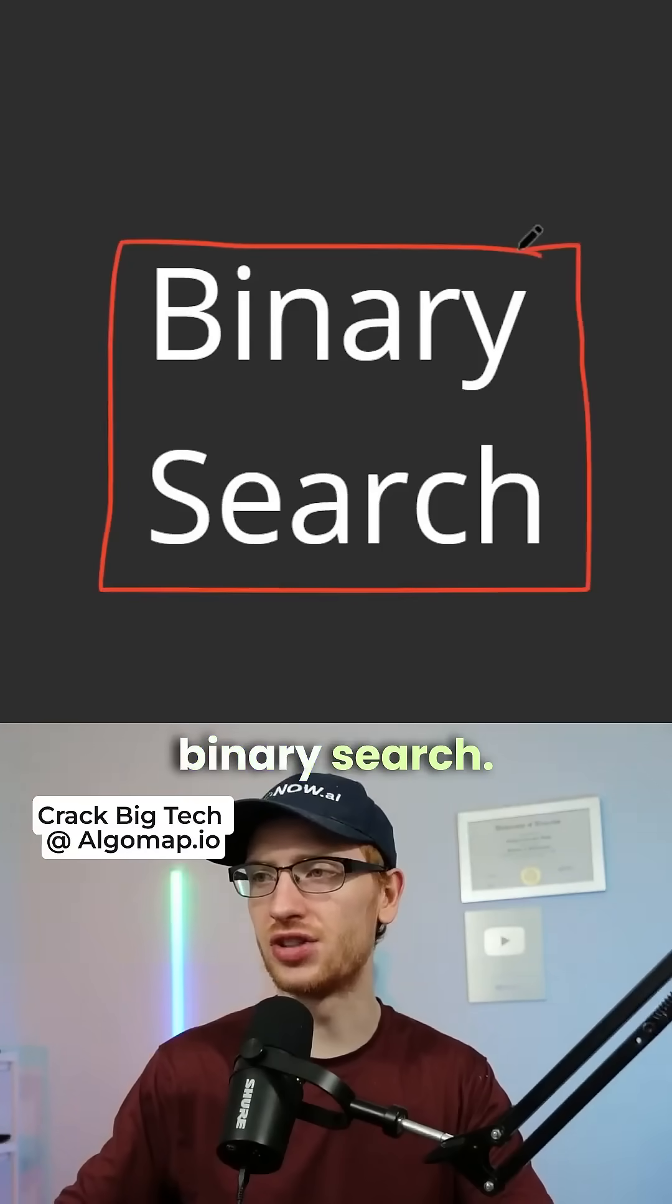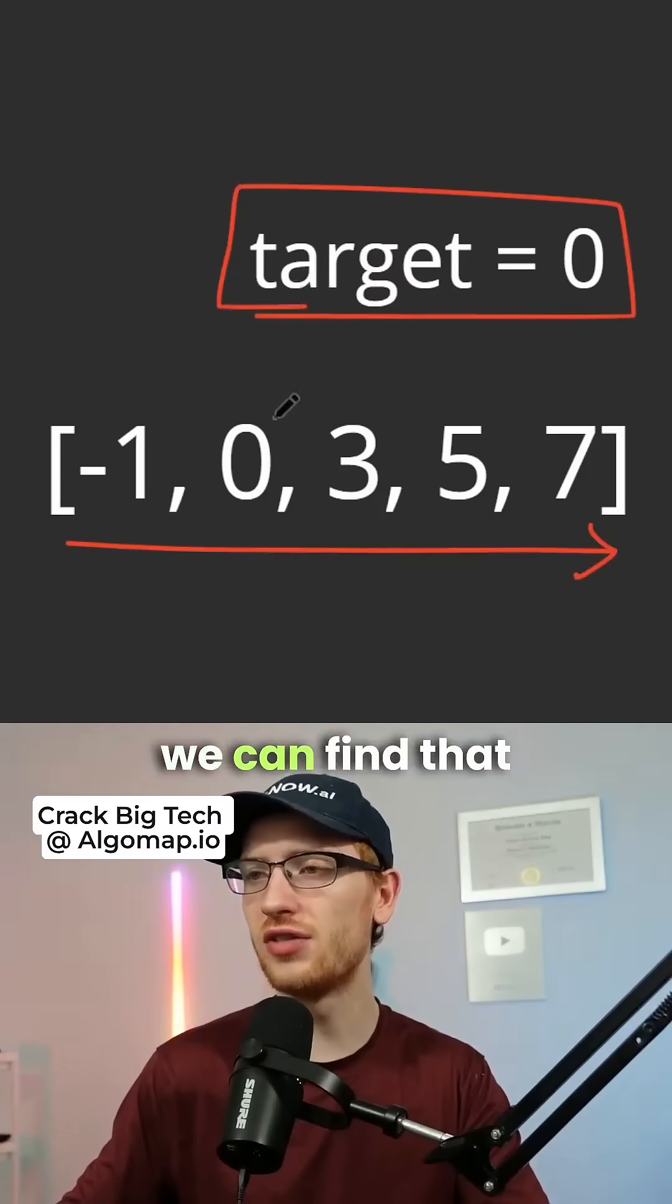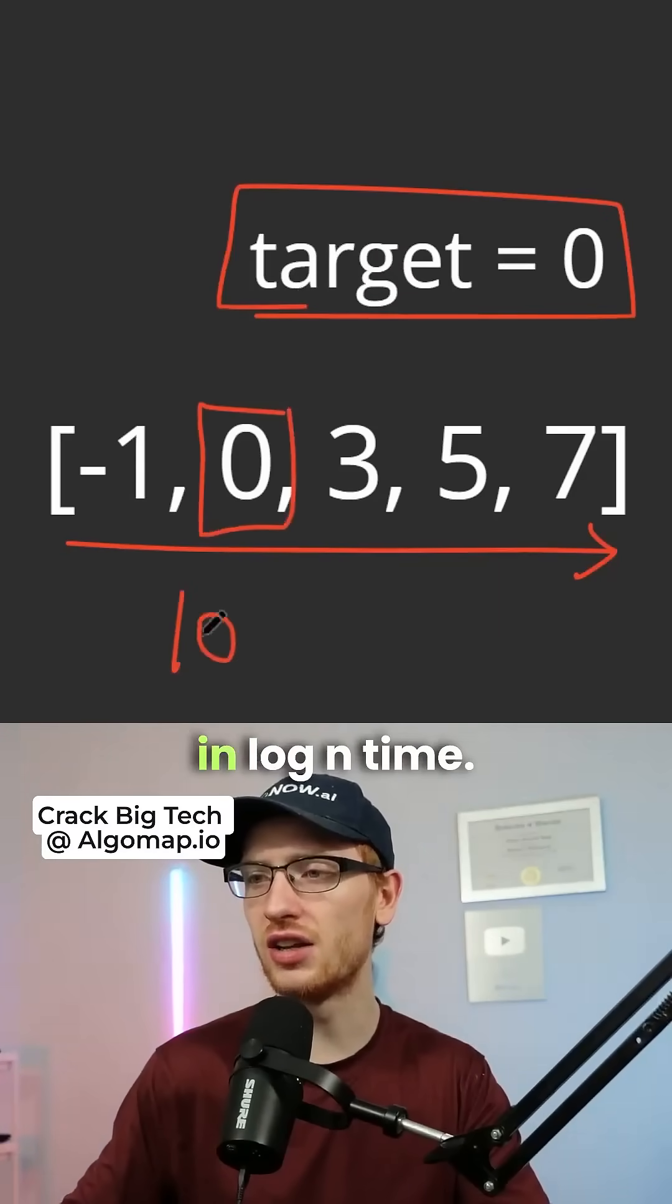This is how to do a classic binary search. Given a sorted list of numbers and a target to search for, we can find that target in the array in log n time.